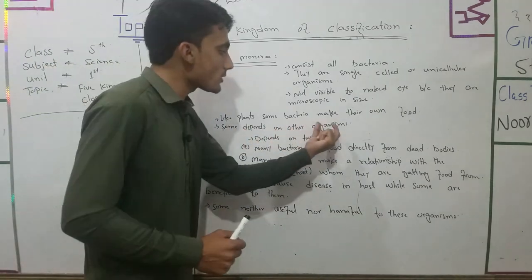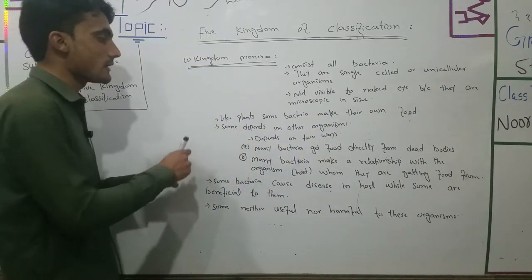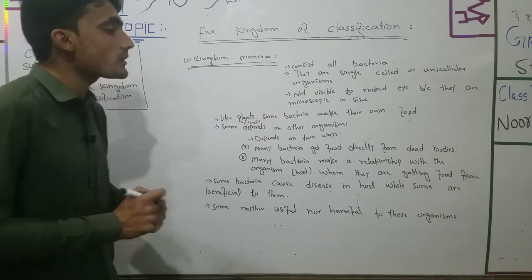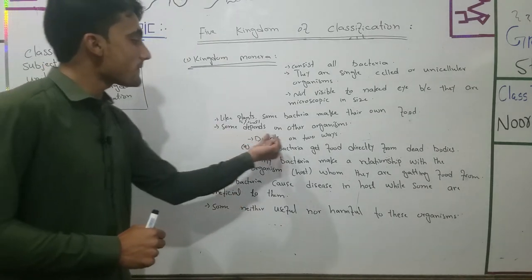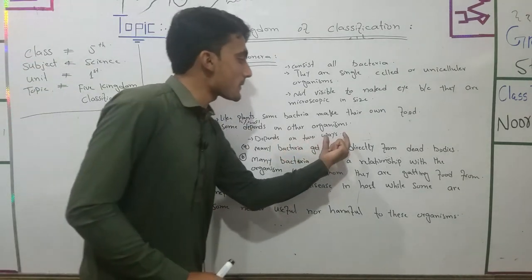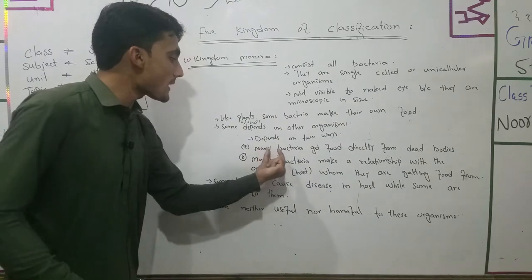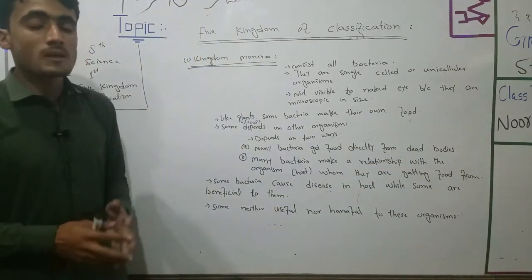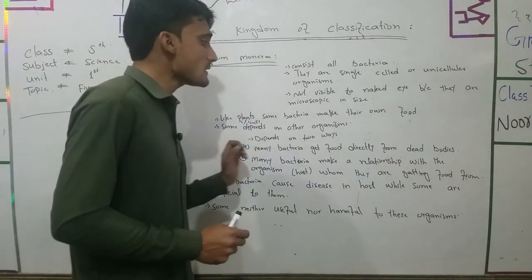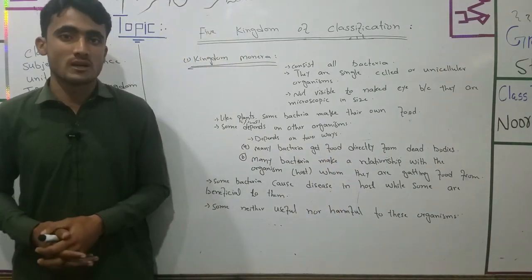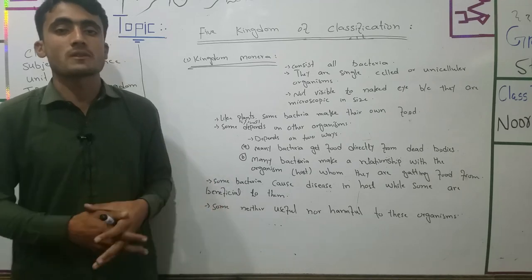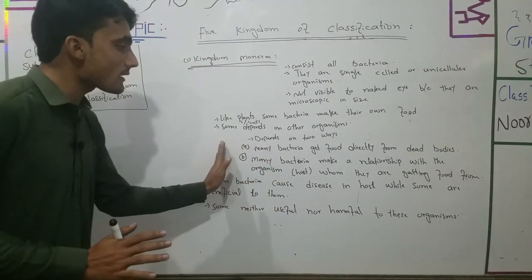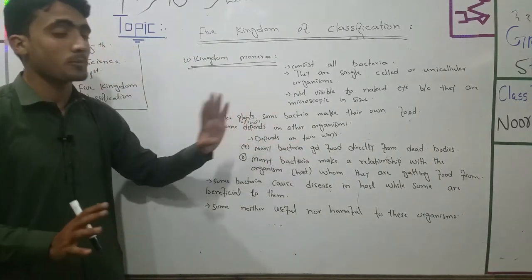Some bacteria depend on other organisms. Many bacteria get their food directly from dead bodies — dead plants and dead animals. These bacteria obtain nutrition directly from dead bodies.